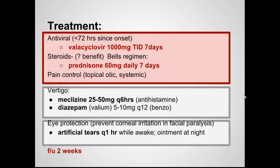What's our treatment? You're going to start off with an antiviral — this is varicella after all. Valacyclovir is a great option, three times a day for seven days. Steroids are plus or minus. The Bell's palsy regimen is about 60 mg of prednisone for seven days. In a patient you're not concerned about giving a steroid to, it'll hopefully help clear up their symptoms or lessen the pain. And of course, pain control — think about anything topical by the ear and something systemic to help them get through this.